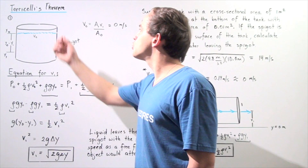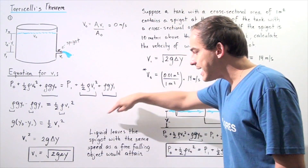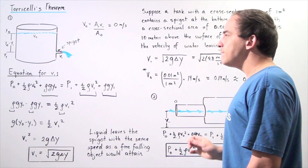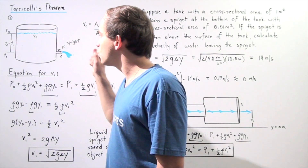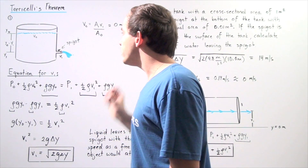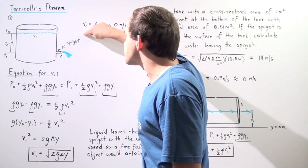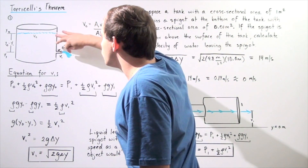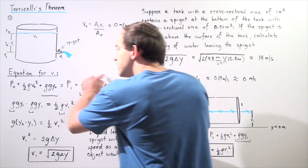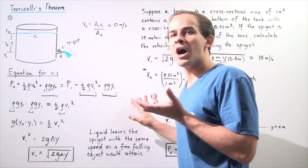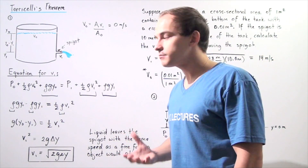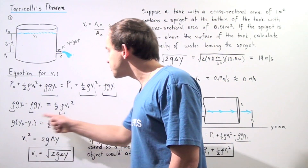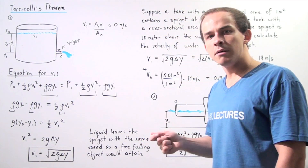This result is known as Torricelli's theorem. It states that liquid leaves the spigot with the same speed a free-falling object would attain if it fell the same vertical distance ΔY, which is Y0 minus Y1. This makes sense because the entire equation was derived from the law of conservation of energy — the work-energy principle. Torricelli's theorem comes directly from Bernoulli's equation.